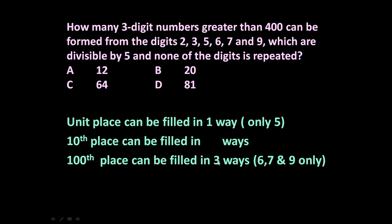The hundreds place can be filled in three ways because 6, 7, or 9 can occupy this position. The number should be greater than 400, and 5 cannot occupy this position because it is already used in the unit place. So 6, 7, or 9 — any one of them can occupy this position, giving three ways.